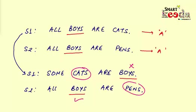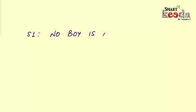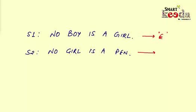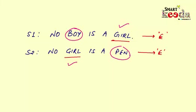On the other hand, if you have two statements of E-type, the middle term will be distributed twice. Applying the same conversion approach will be of no use, because a conversion of an E-type statement will always give an E-type statement, and the distribution of the middle term will remain twice. Hence, in two E-type statements we cannot find a definite conclusion between the other classes.